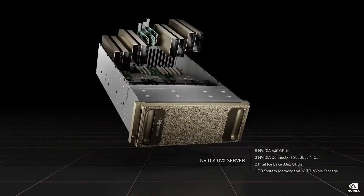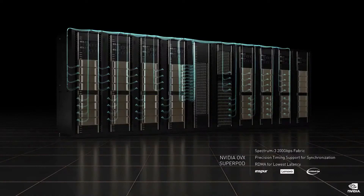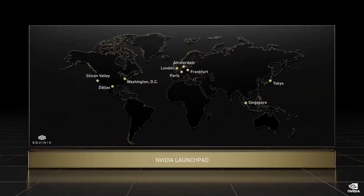The first generation of NVIDIA OVX Omniverse computer consists of eight A40 RTX GPUs, three CX6 200 gigabits-per-second NICs, and dual Intel Ice Lake CPUs. The NVIDIA Spectrum 3 200 gigabits-per-second switch fabric connects 32 OVX servers to form the OVX SuperPod. Most importantly, the network and computers are synchronized using precision timing protocol, and RDMA minimizes packet transfer latency. OVX servers are now available from the world's top computer makers.